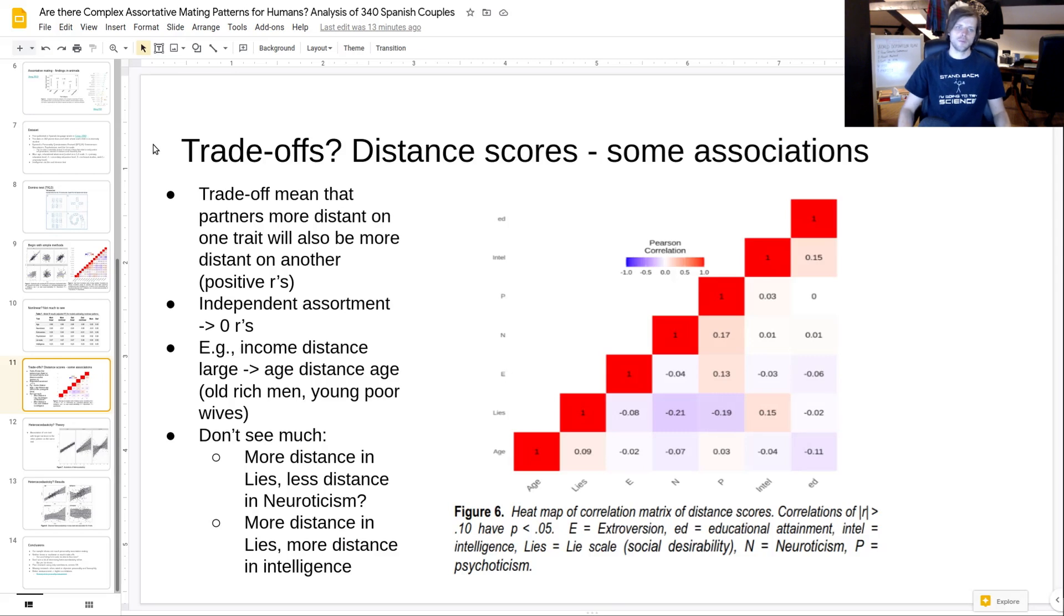This we looked at already. So what we can look at also is we can look at trade-offs. And the trade-off is that when partners who are more different on one trait are then less different on another trait, or more different on another trait. For instance, if you have the typical hypothetical situation, let's say we have wealthy men get to date younger women. This would result in correlations where larger intelligence differences or income differences or education differences are also associated with larger age gaps.